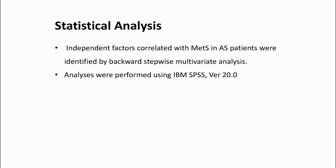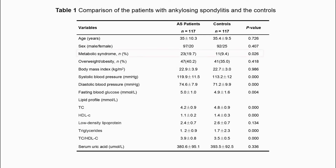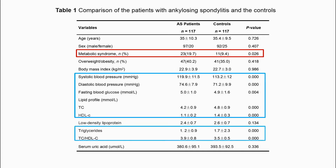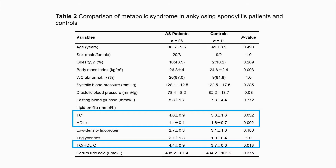A multivariate logistic regression model was constructed to identify independent predictors of MetS in patients with AS. The prevalence of MetS was higher in AS patients than in controls. AS patients had higher blood pressures and fasting serum glucose levels, but generally lower serum lipids. The serum lipids between MetS in AS patients and healthy controls were also different.